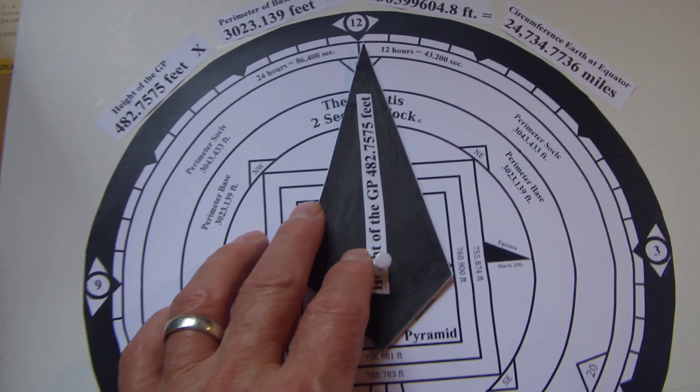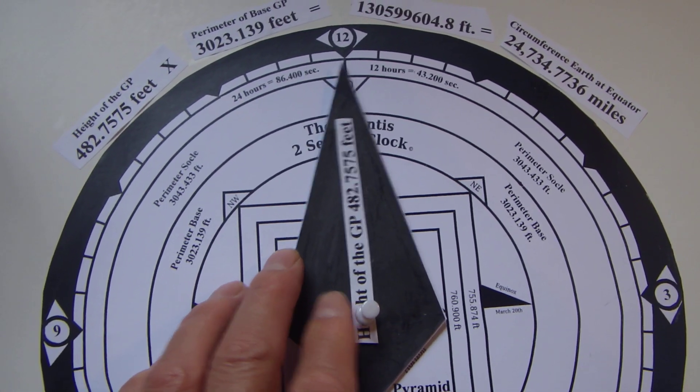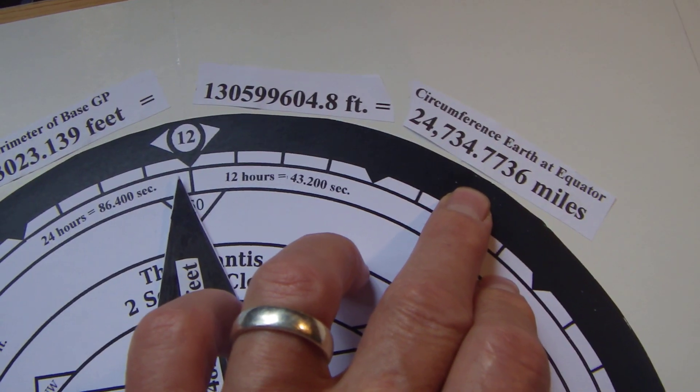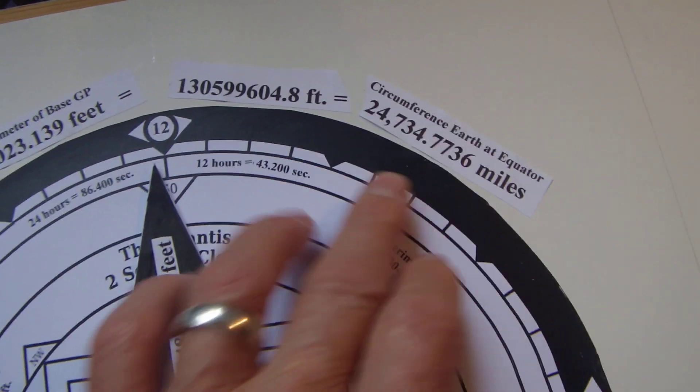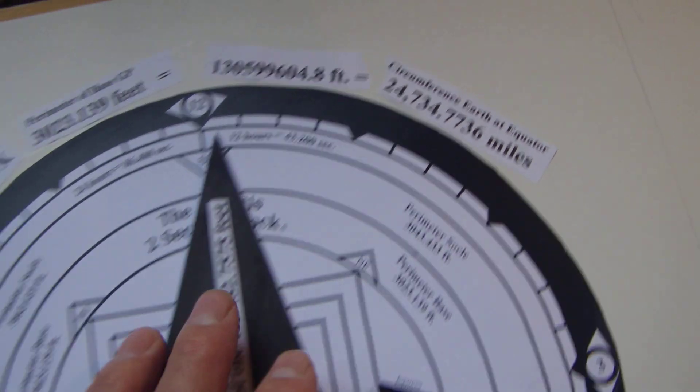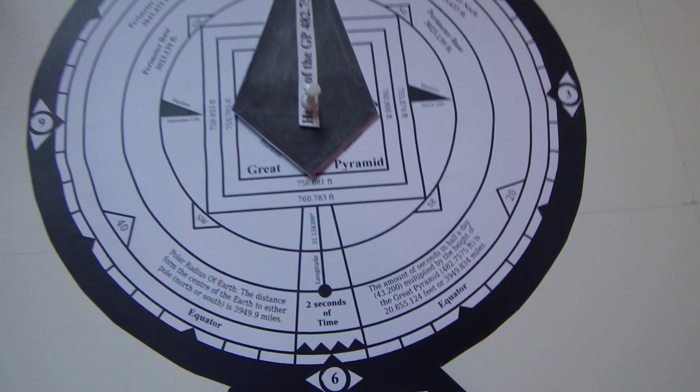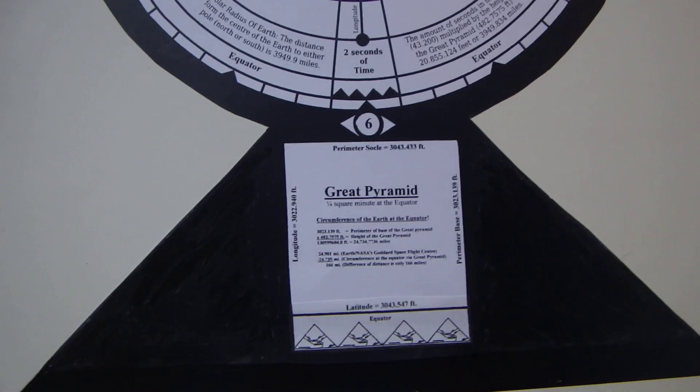And then there's the number we come up with. So my intention today is just to show a brief demonstration of how these things work. So 24,734 miles - we're only off by about 166 miles from the calculations that are given to the size of the earth today at the equator.